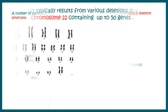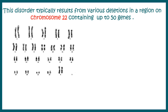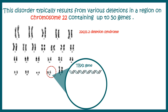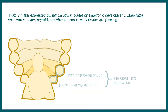This disorder is typically due to the 22q11.2 deletion, which results in at least 20 or more genes being deleted or affected. One of the most important of these is the TBX1 gene.